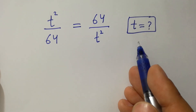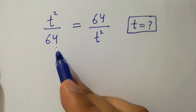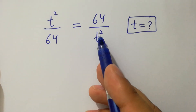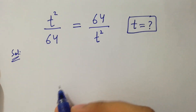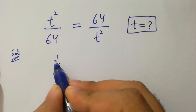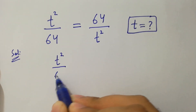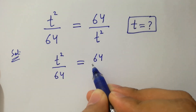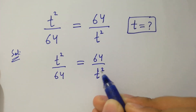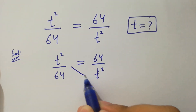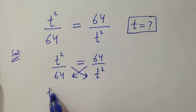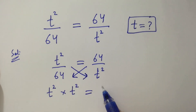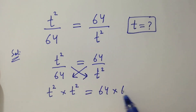Hello friends. Find the value of t if t squared over 64 equals 64 over t squared. Let's have a solution. So we have the question: t squared over 64 equal to 64 over t squared. It can be solved by cross multiplication. We have t squared times t squared equal to 64 times 64.